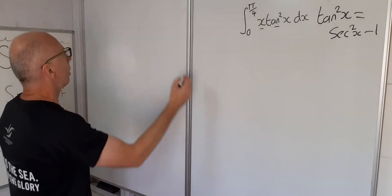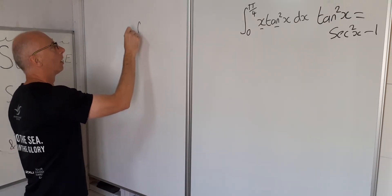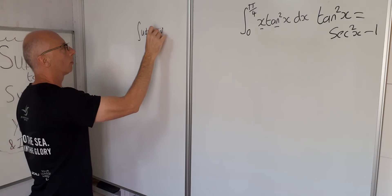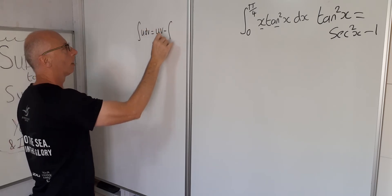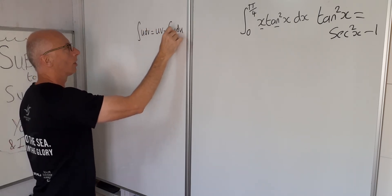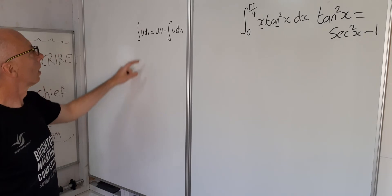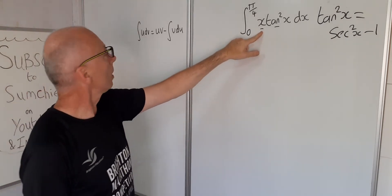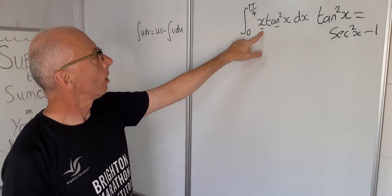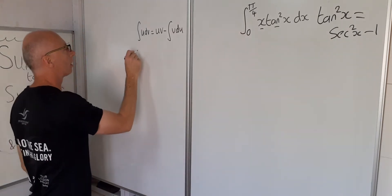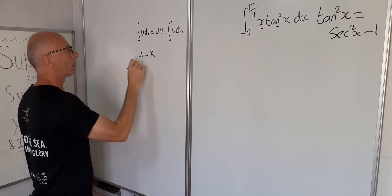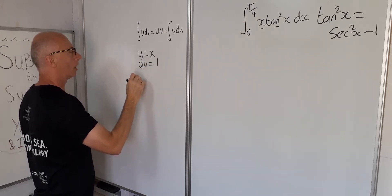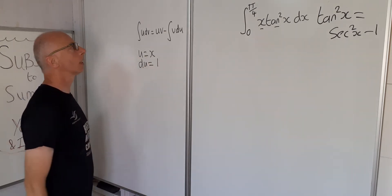So the integration by parts formula: the integral of u dv equals u times v minus the integral of v du. We're going to set u equal to x, so if u equals x, then du equals 1. That's the u and du sorted.